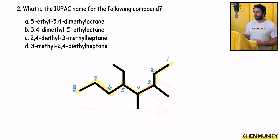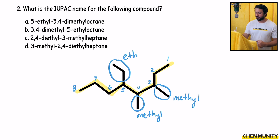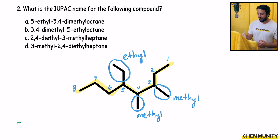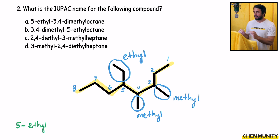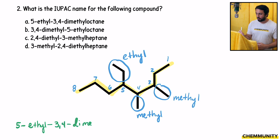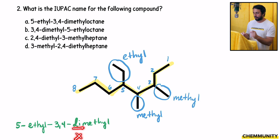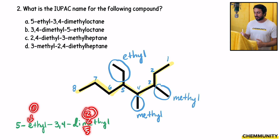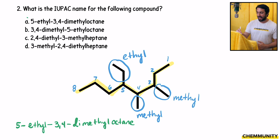If we numbered left to right, we wouldn't have a substituent until carbon four. Then we see what substituents we have: we have a methyl here, a methyl here, and an ethyl there. Naming these alphabetically, we do ethyl first: 5-ethyl. Then we name the methyls: 3,4-dimethyl. Remember the prefix 'di' does not make it D for dimethyl — it is still M for methyl, so ethyl comes before methyl. We have eight carbons, making it an octane: 5-ethyl-3,4-dimethyloctane.